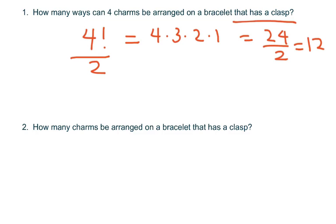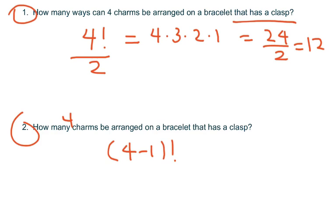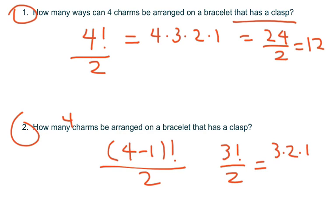Now, how many ways can four charms be arranged on a bracelet without a clasp? That's circular with a mirror image, so it's (4 minus 1) factorial over 2, which is 3 factorial over 2. That equals 3 × 2 × 1 divided by 2, which equals 3.